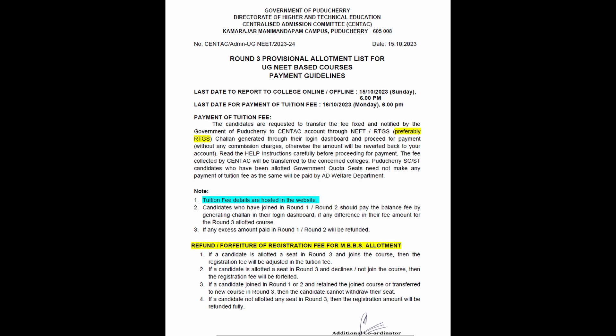If a candidate is allotted a seat in Round 3 and declines — if you don't join the course or don't join the seat in Round 3 — then your registration fee is forfeited. If a candidate joined in Round 1 or Round 2 and retains or transfers to a new course, they cannot withdraw their seat. Once you join in Round 3, your registration fee will be refunded if you withdraw your seat in Round 3.